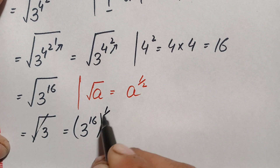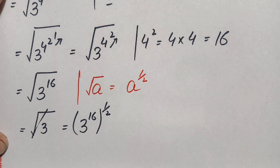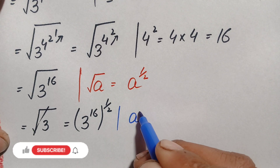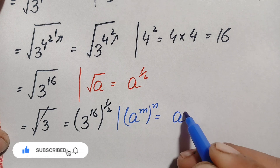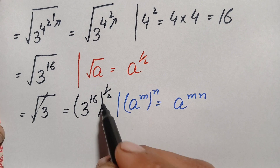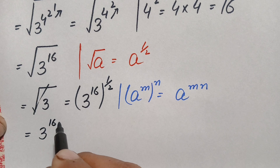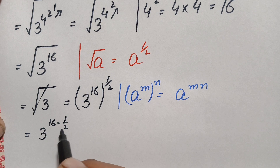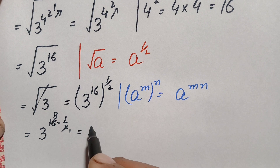Now we use an exponential identity: a raised to the power m, raised to the power n, can be written as a raised to the power m times n. Using this identity, we multiply the powers with each other, giving 3 raised to the power 16 times 1 over 2. Simplifying: 2 times 1 is 2 and 2 times 8 is 16, so this becomes 3 raised to the power 8.